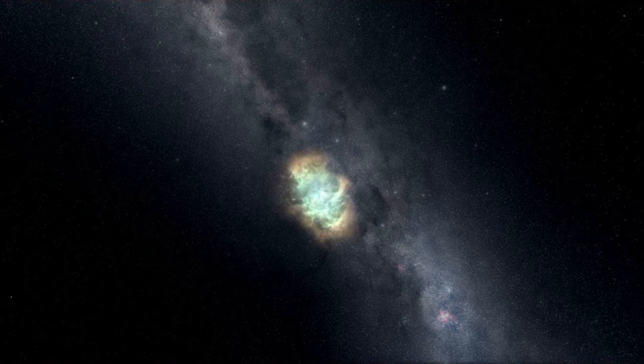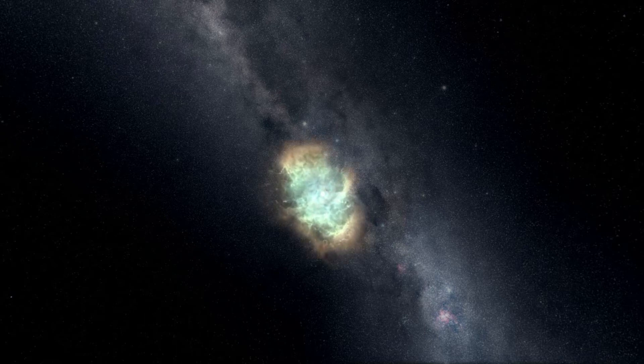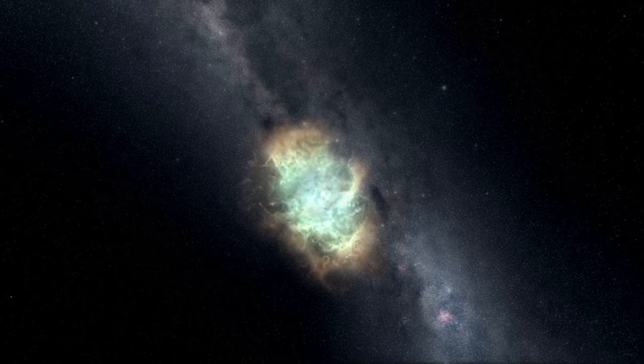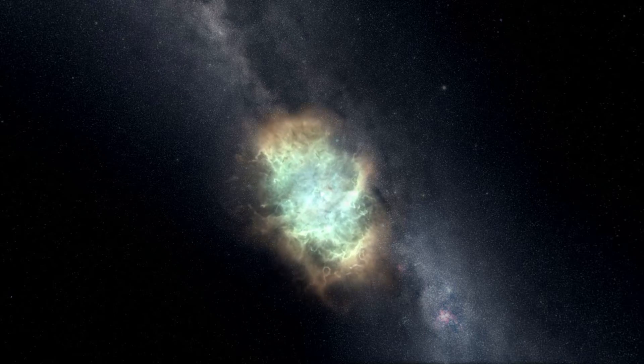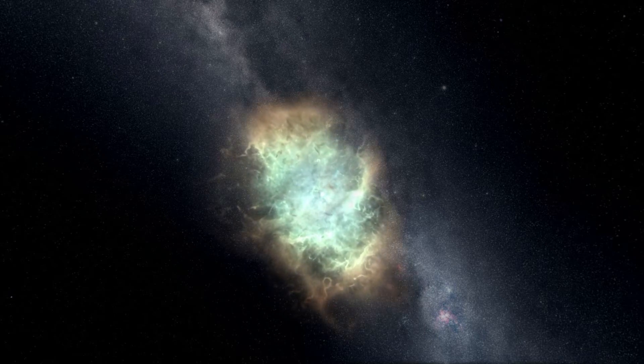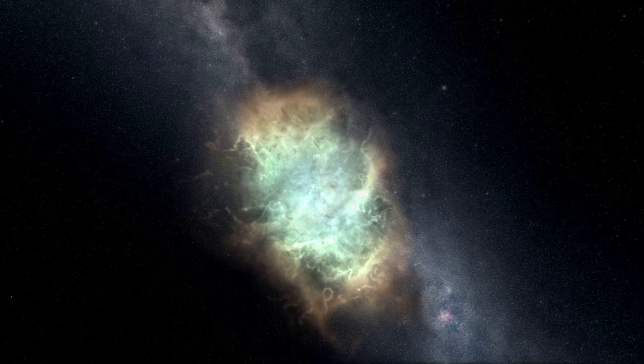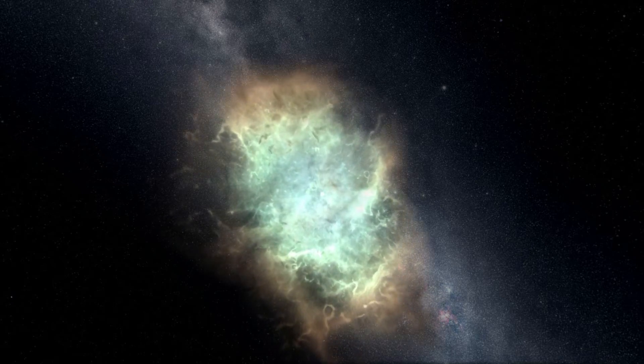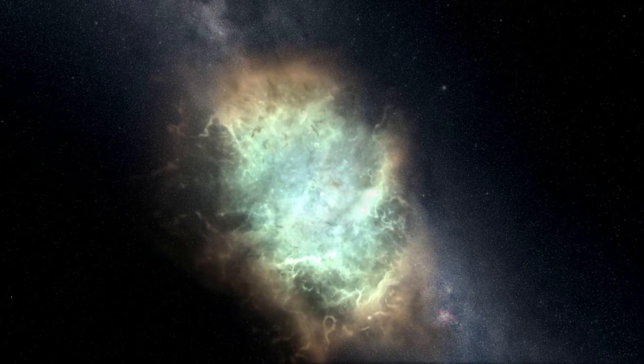Then the outer layers of the Sun will drift off into space forming a planetary nebula, thus exposing the core. Most of its mass will go to the nebula.